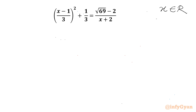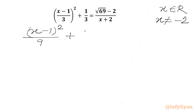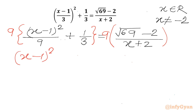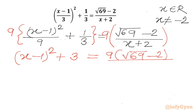Let's get started by writing that the denominator cannot be 0, so x cannot be equal to negative 2. We can rewrite the equation as (x minus 1)² over 3² — that is, over 9 — plus 1 over 3, equal to the square root of (69 minus 2 over (x plus 2)). Now we multiply both sides by 9, giving us (x minus 1)² plus 3 equal to 9 times the square root of (69 minus 2 over (x plus 2)).